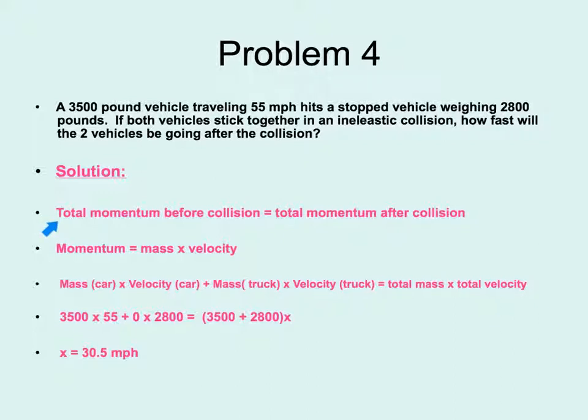First, we have to realize that due to our law of conservation of energy, our total momentum before the collision must equal our total momentum after the collision. The formula for momentum is mass times velocity. So to solve this problem, we can take the mass of car one times the velocity of car one plus the mass of car two times the velocity of car two will equal the total mass of the two cars times the total velocity of the two cars. We will have all of the components for this except one, and it will be a simple algebraic problem.